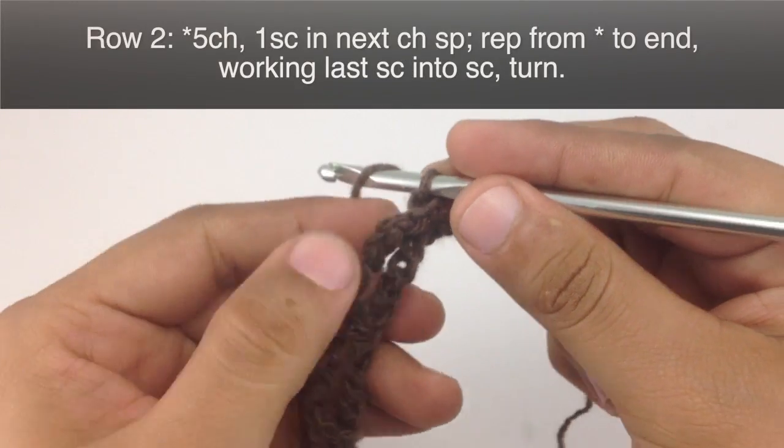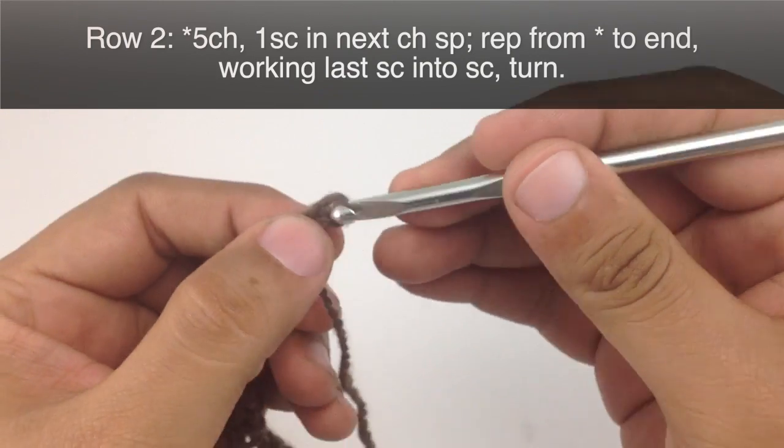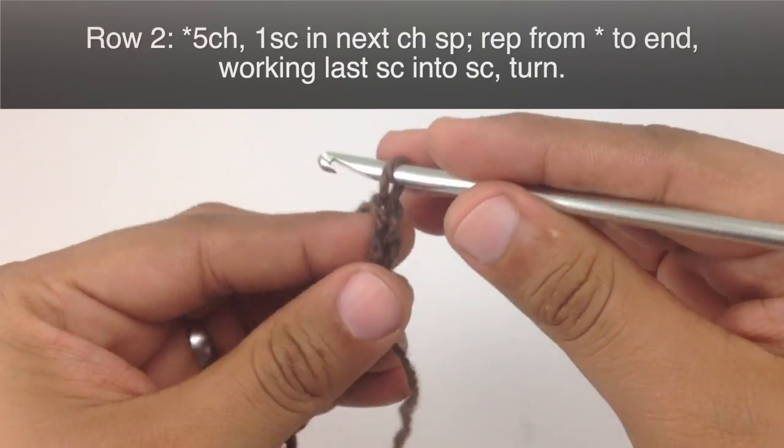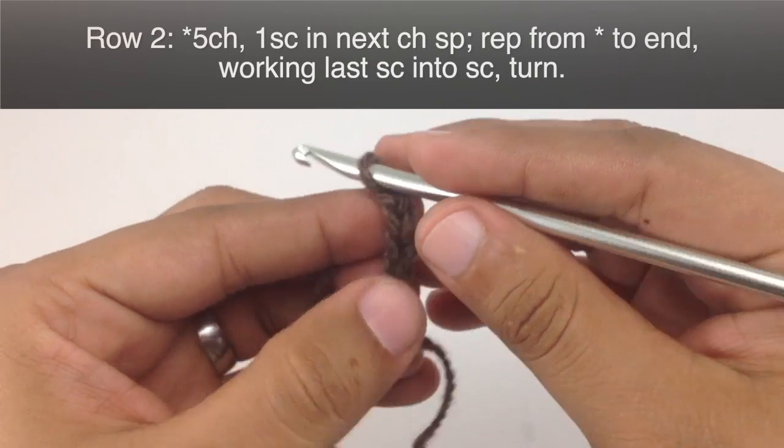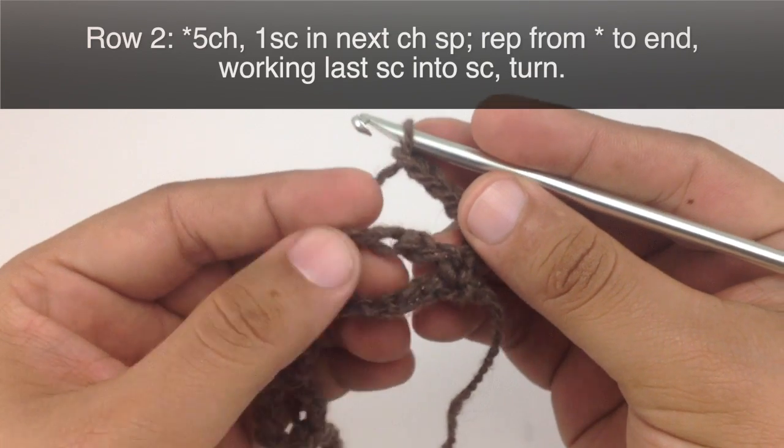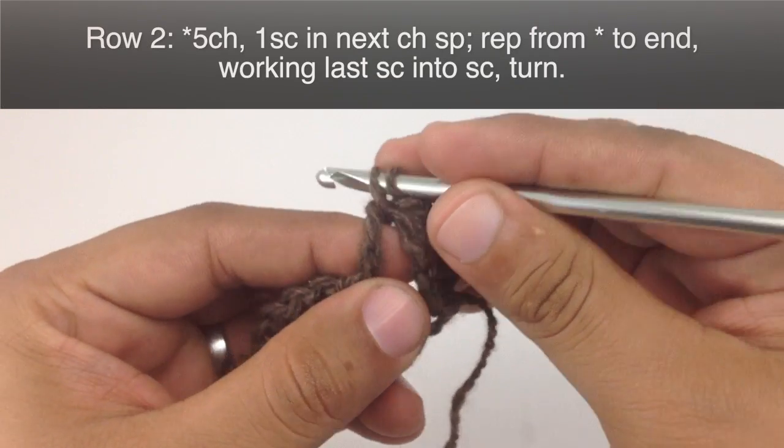Row 2. After we have turned our work we are going to begin by chaining 5, and this will start our repeat. Then we are going to do a single crochet into the next 5 chain space. So that is this big space here. We are just going to go right into the middle and do a single crochet.